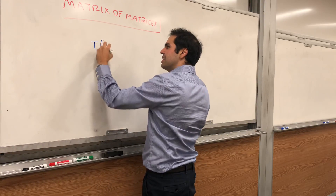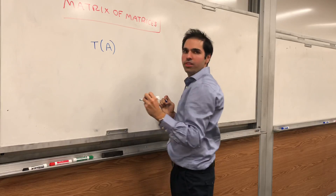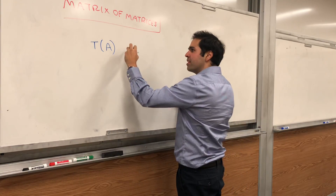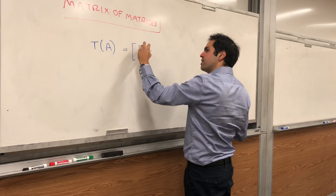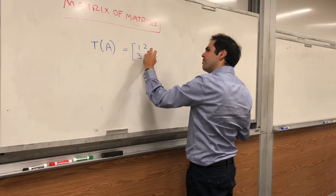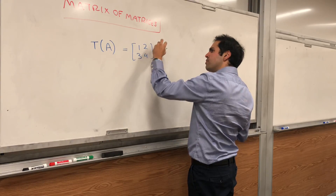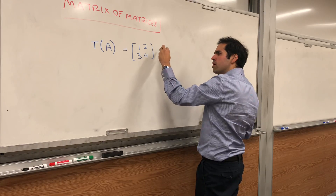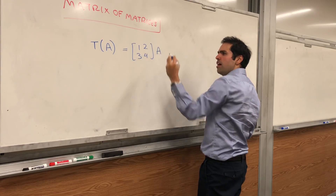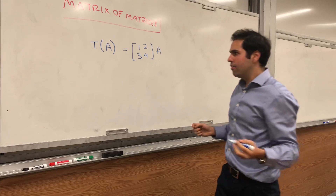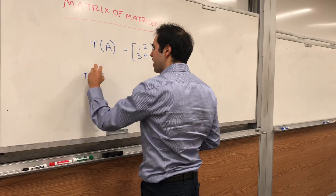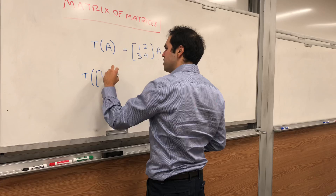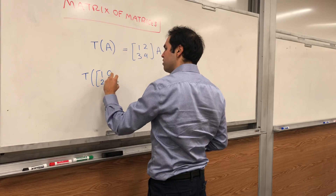T takes a 2×2 matrix as an input and spits out another 2×2 matrix, resulting by multiplying the fixed matrix [1,2,3,4] to the left by A. For example, let me illustrate that. Let's take T of the matrix [1,0,2,1].